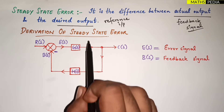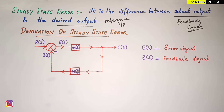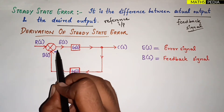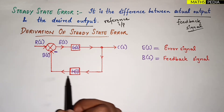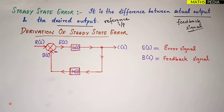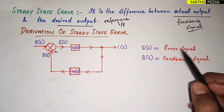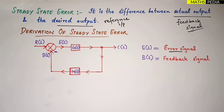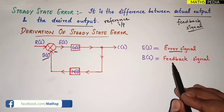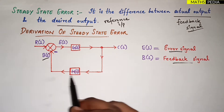When deriving steady-state error, we use a closed-loop system with negative feedback — you can see here it is minus, indicating negative feedback. In this system, E(s) is the error signal, and B(s) is the feedback signal coming from the output side.